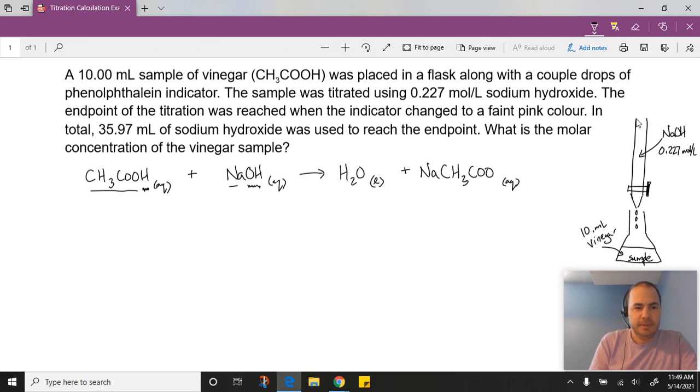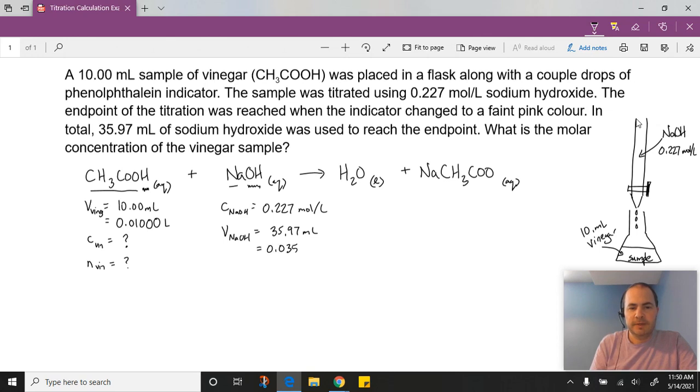So I like to write down what I know. I'm going to jot down my volume of my vinegar equals 10 mLs. And as we've done a lot, it's useful to have this into liters, because when we're calculating moles, we're typically working with moles per liter. We're going to want volume in liters, so there's my 10 mLs, 0.01 liters. I am trying to find my concentration of the vinegar. I don't know the number of moles of the vinegar, but that's what we're going to try to get to. I know the concentration given in the question of the sodium hydroxide, it's 0.227 moles per liter. And the volume that we used of the NaOH in our titration was 35.97 mLs, which would be equivalent to 0.03597 liters.